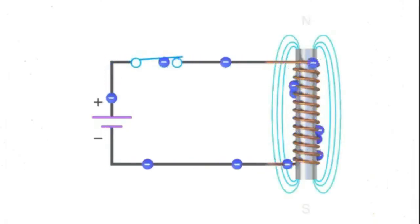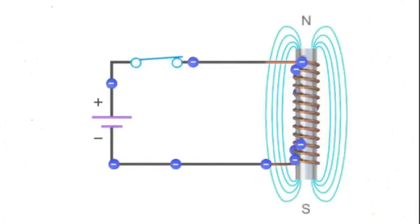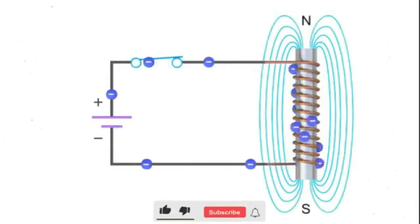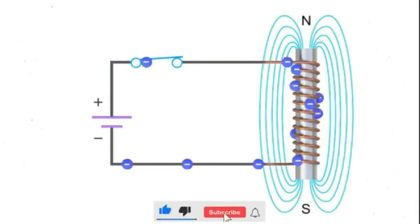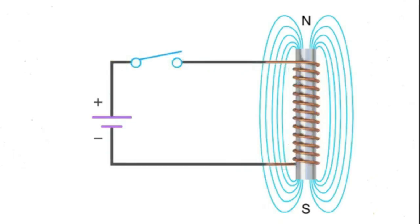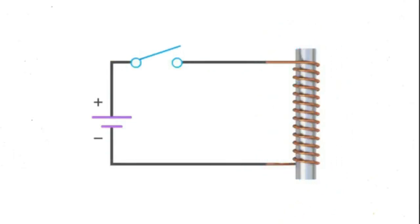If the current tries to change suddenly, the inductor's magnetic field resists this change, which slows the current's increase or decrease. This stored energy can be released back into the circuit when the magnetic field collapses.